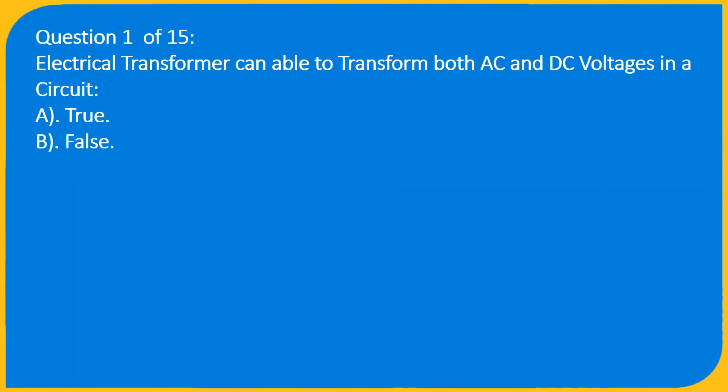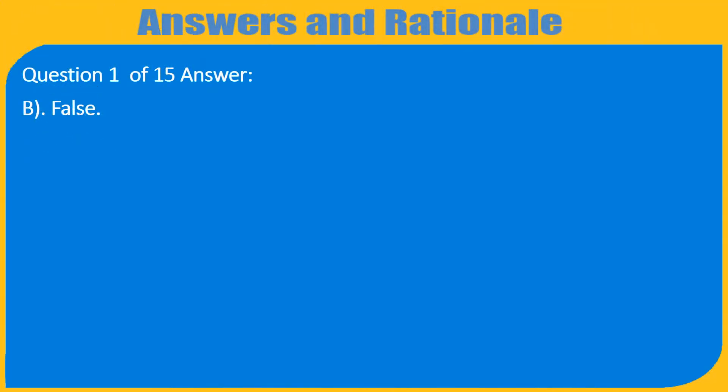Question 1 of 15: An electrical transformer can transform both AC and DC voltages in a circuit. A. True. B. False. Answer: B. False.